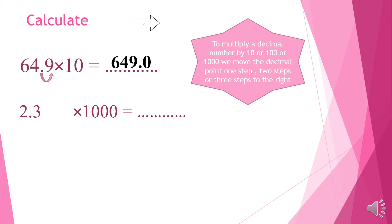Let's take another example: 2.3 times 1000. I will move the point how many steps? Excellent — three steps to the right side. Why three steps? Because we have three zeros. Let's move the point three steps: one, two, three. Excellent. Here we have two empty places, so we fill them by zeros. We get 2300.0.